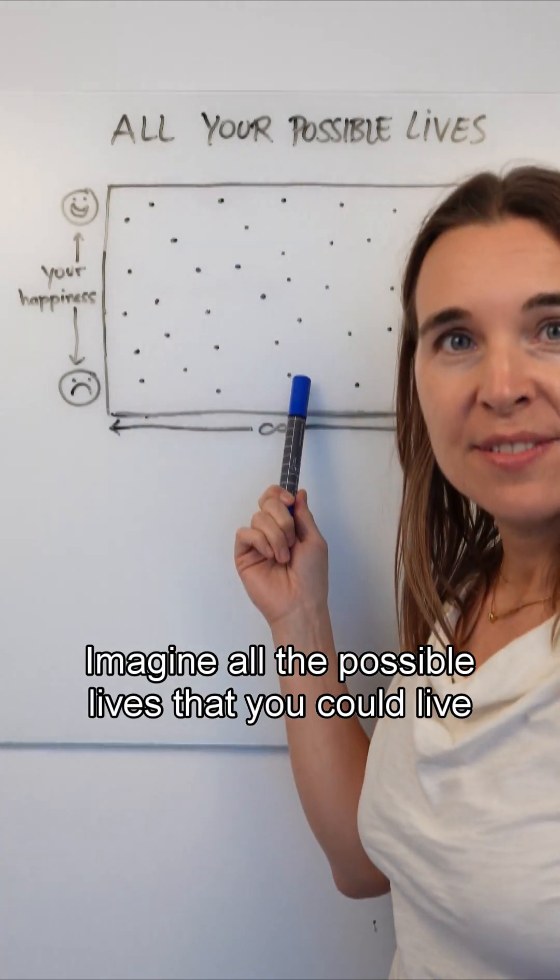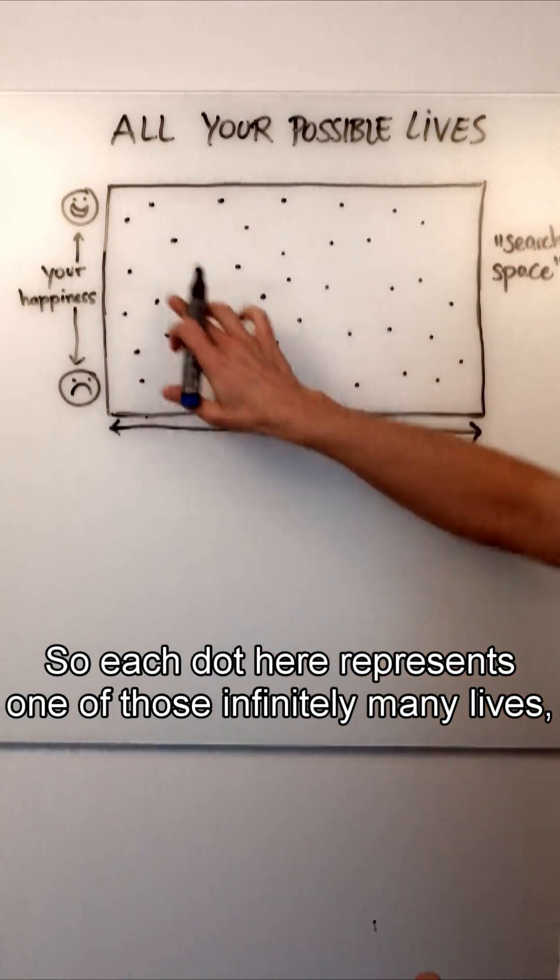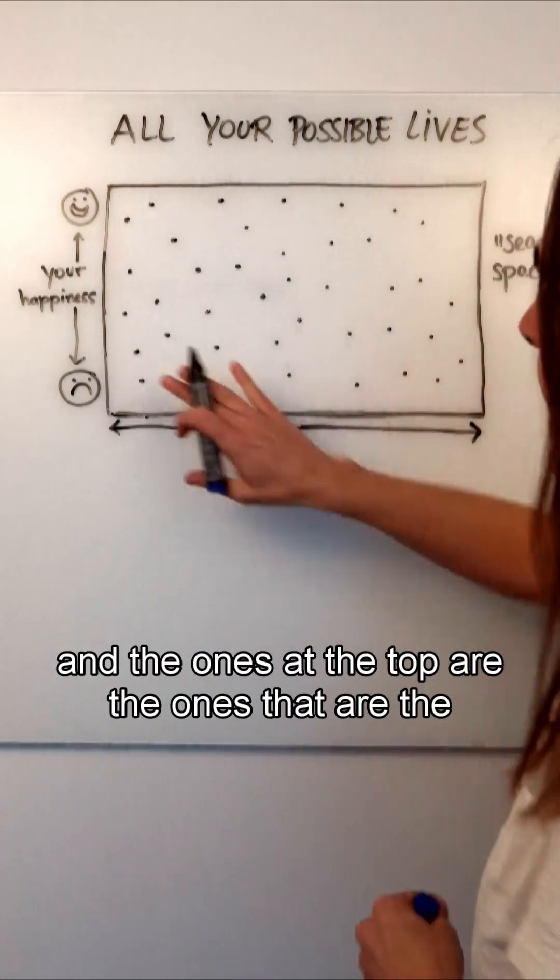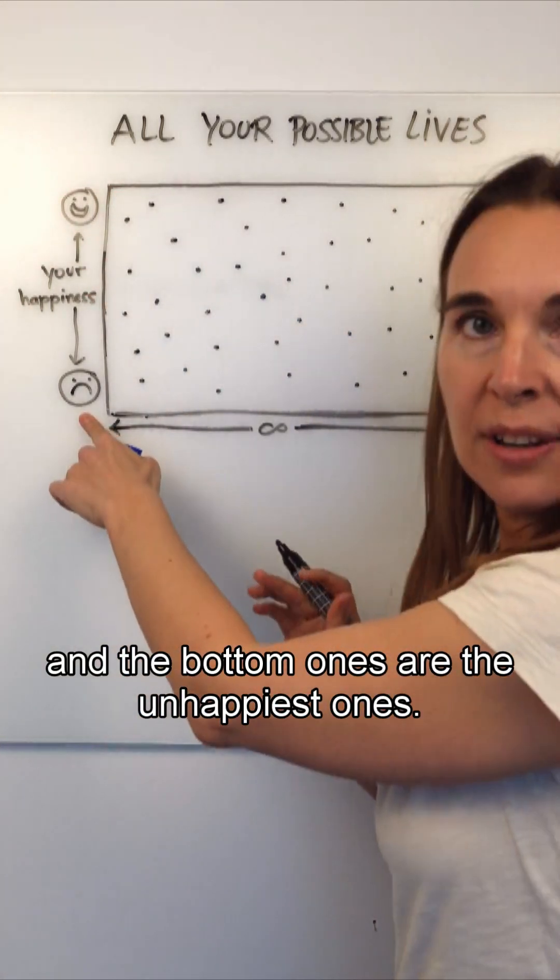Imagine all the possible lives that you could live from now on. So each dot here represents one of those infinitely many lives. And the ones at the top are the ones that are the happiest for you, and the bottom ones are the unhappiest ones.